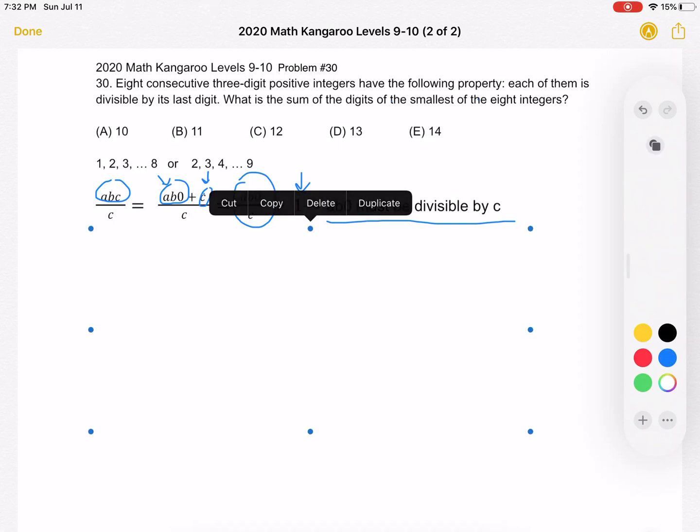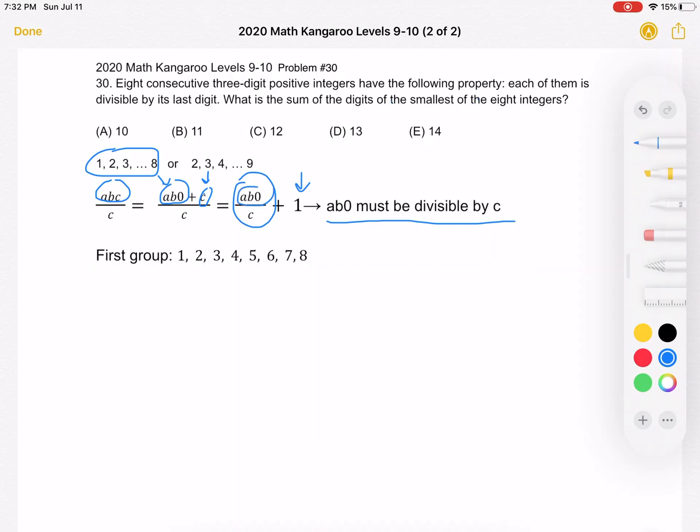Now, let's start with this group of numbers, test it out, see what we get, and then try the second one. Our first group, we're going to say we have one, two, three, four, five, six, seven, and eight as the Cs. What we want to do is figure out what the number AB0 must be in order for it to be divisible by all these different Cs. How do we do that? We want to find the lowest common multiple of these numbers.